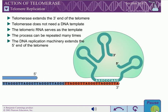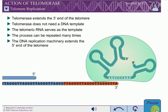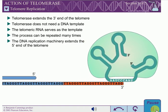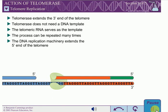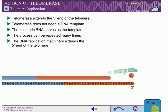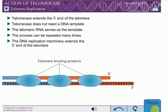The lagging strand DNA replication machinery can then extend the 5' end of the chromosome. Although DNA polymerase is still unable to extend the 5' end all the way to the end of the chromosome, the telomeric repeats protect the genes at the end of the chromosome in two ways: by serving as a buffer of non-coding DNA and by binding proteins that prevent the degradation of the ends of the chromosomes.